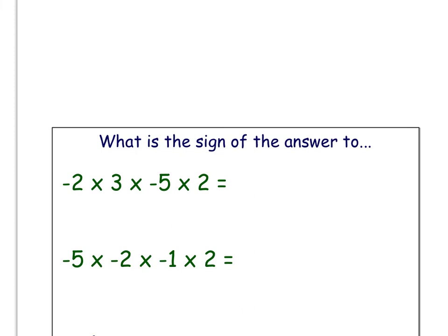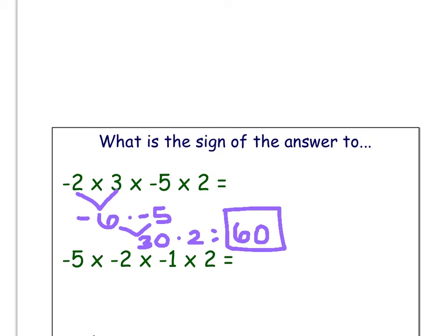Sometimes you're not always going to have just two numbers that you're multiplying. Like for these, I have negative 2 times 3 times negative 5 times 2. So I could go two at a time: negative 2 times 3 is negative 6. Then negative 6 times negative 5 gives me a positive 30. And then 30 times 2 is 60. So I get a positive answer there.